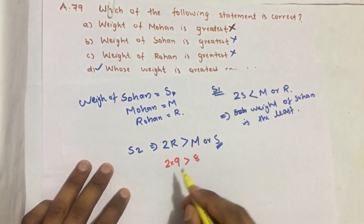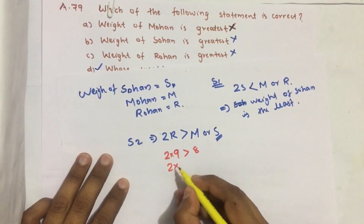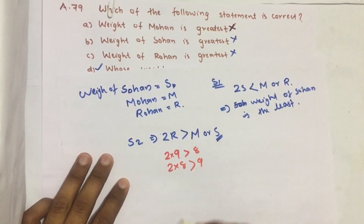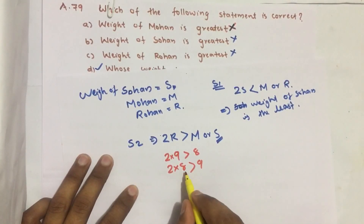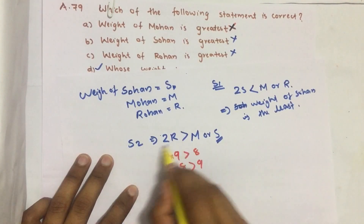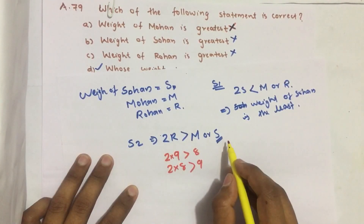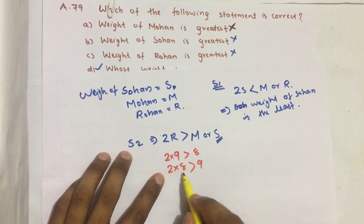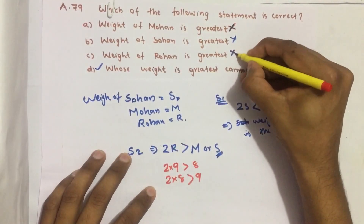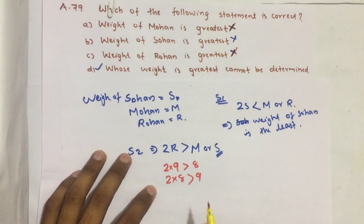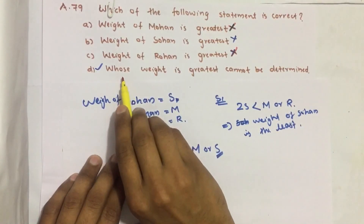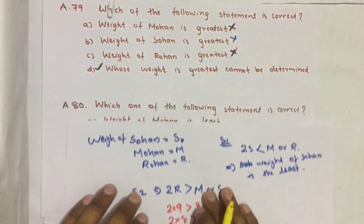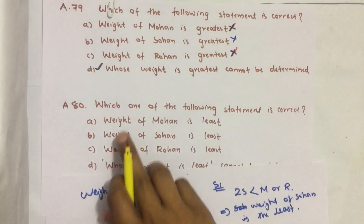Next, is the weight of Sohan the greatest? We already know the weight of Sohan is the least, so that is wrong. Is the weight of Rohan the greatest? If weight of Mohan = 8, then 2 × 8 = 16 which is greater than 9 — that statement is also satisfied, but weight of Rohan is less than weight of Mohan. So this statement is also wrong. Therefore, whose weight is greatest cannot be determined — option D is our answer.